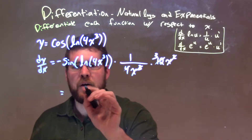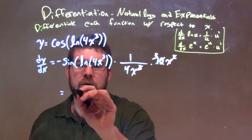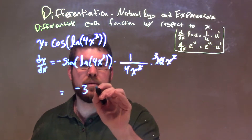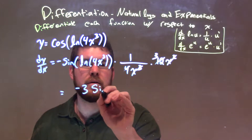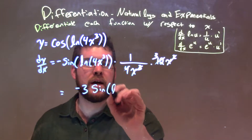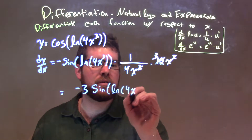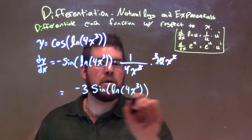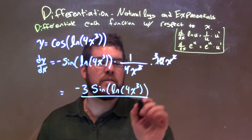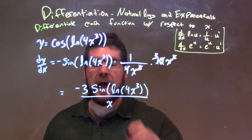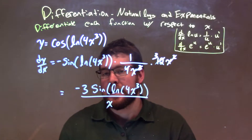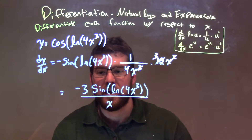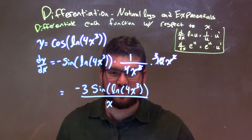This gives us a negative 3 out front. We have negative 3 times the sine of natural log of 4x to the third, all over what's left in the denominator, which is just x. At this point we've pretty much simplified it and we have a final answer.